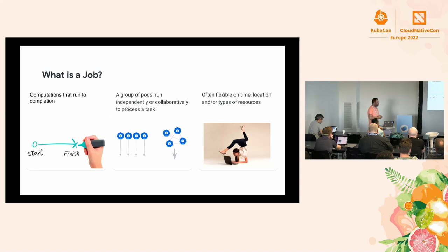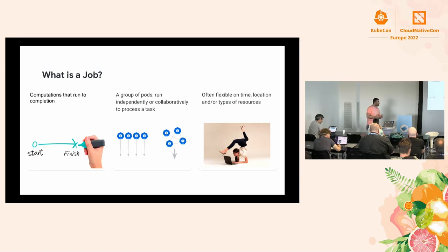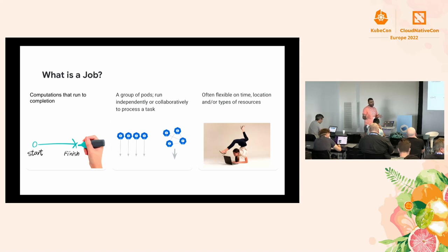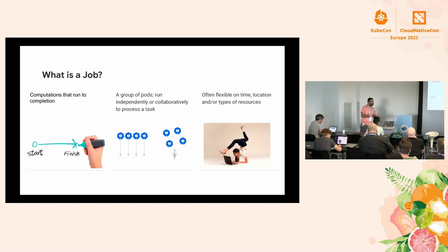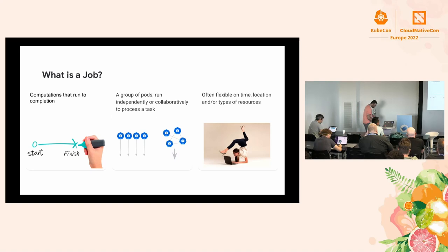They are flexible on time — they don't necessarily need to run right now. It's not like a request you're serving to an end user; their start time can be pushed farther ahead. They are sometimes flexible on location — in the cloud you have multiple regions and zones, they don't always need to run in a specific region, they could run in a different zone, though of course data locality restrictions apply. They are also flexible on types of resources — they could run different GPU types or different CPU architectures, like Intel versus AMD.